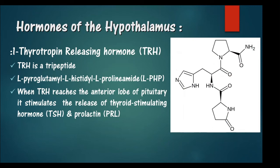We will see the hormones of the hypothalamus one by one. First is the thyrotropin-releasing hormone (TRH), which is a tripeptide made of glutamate, histidine, and proline. With slight modifications, it is referred to as pyroglutamyl-histidine-prolinamide as the thyrotropin-releasing hormone.